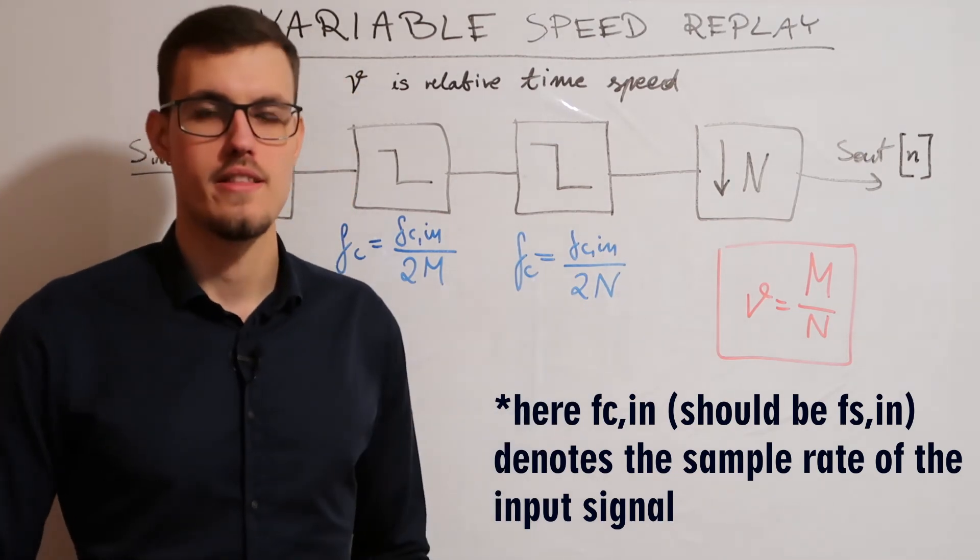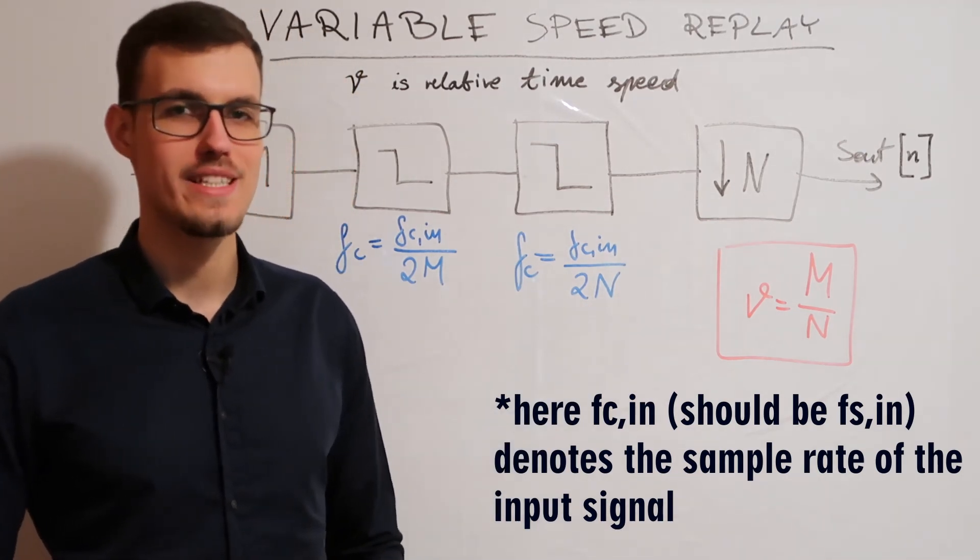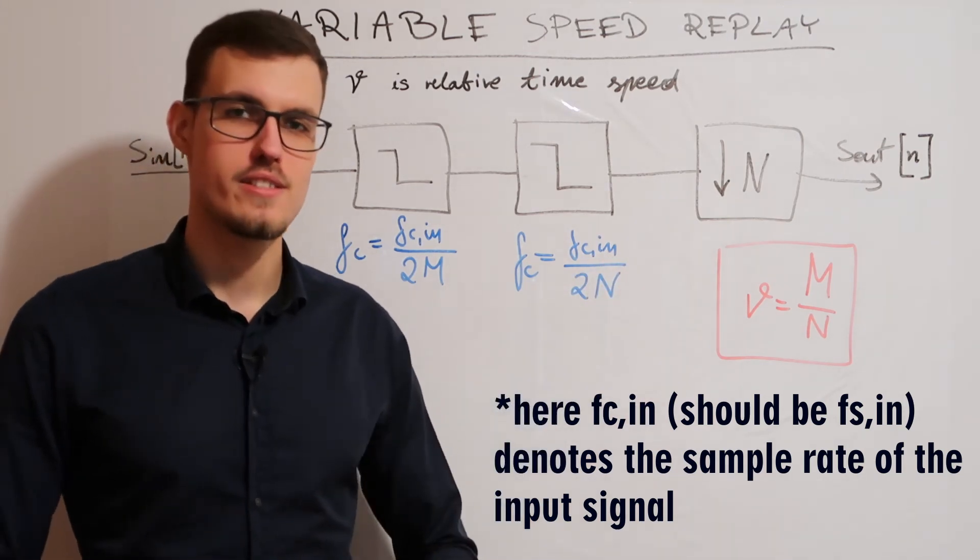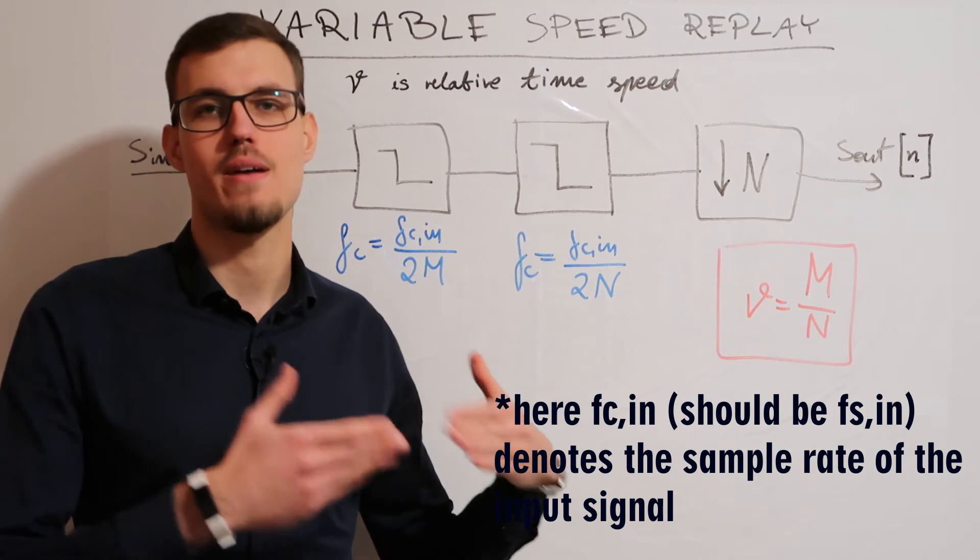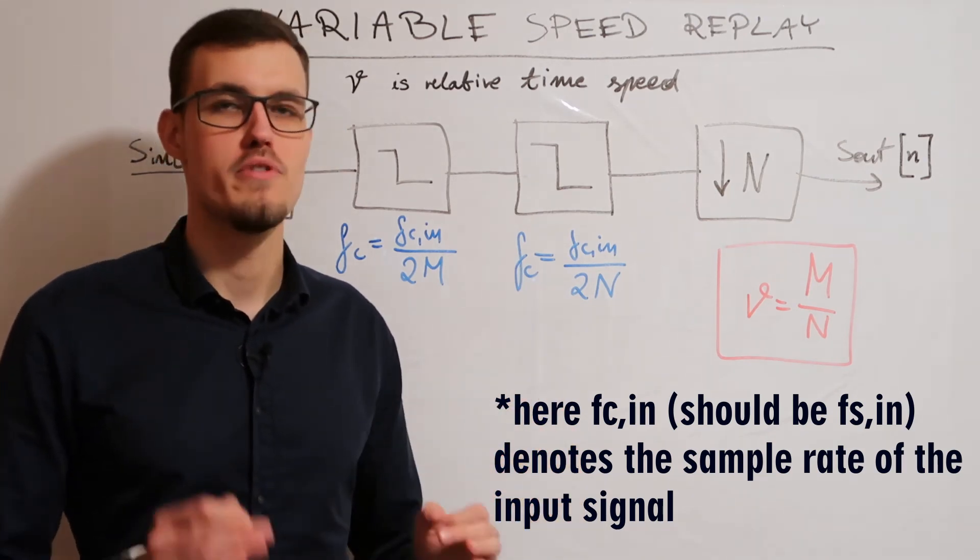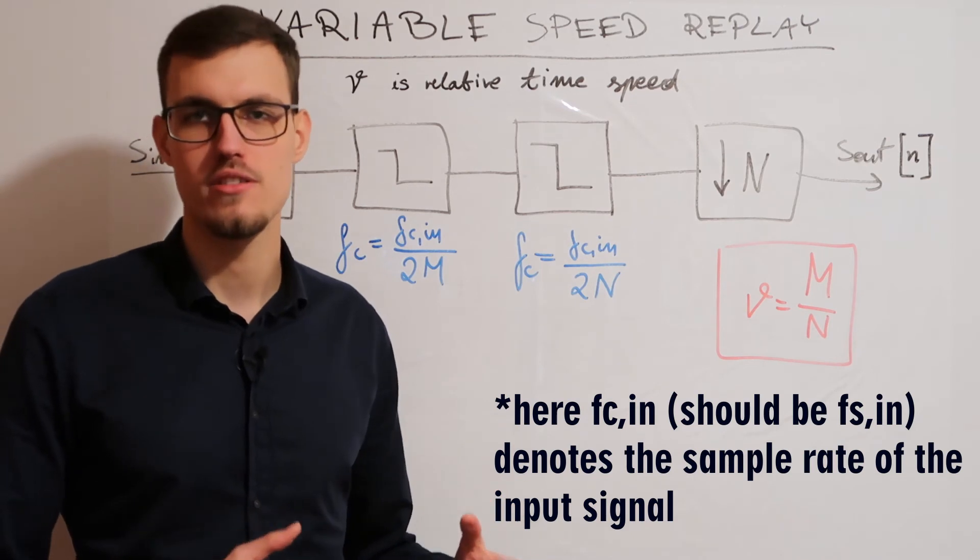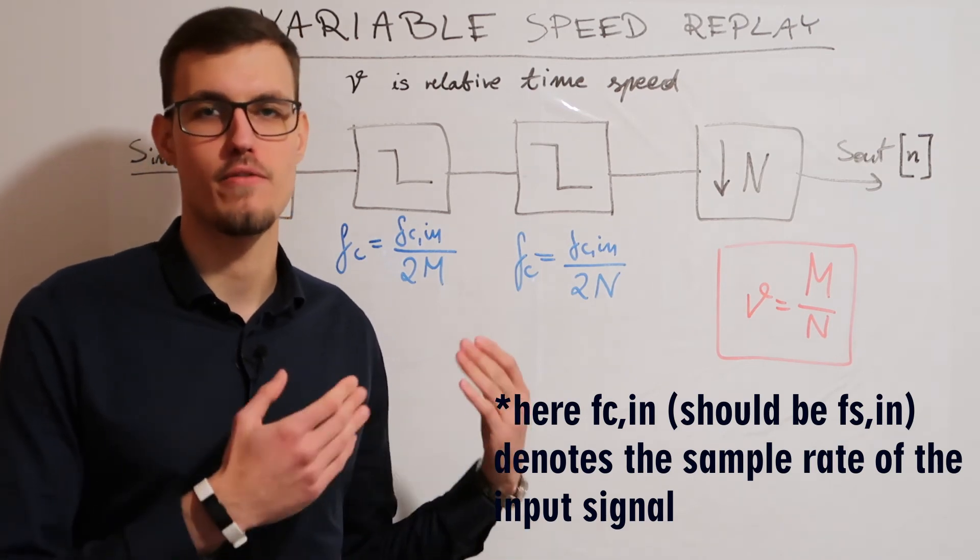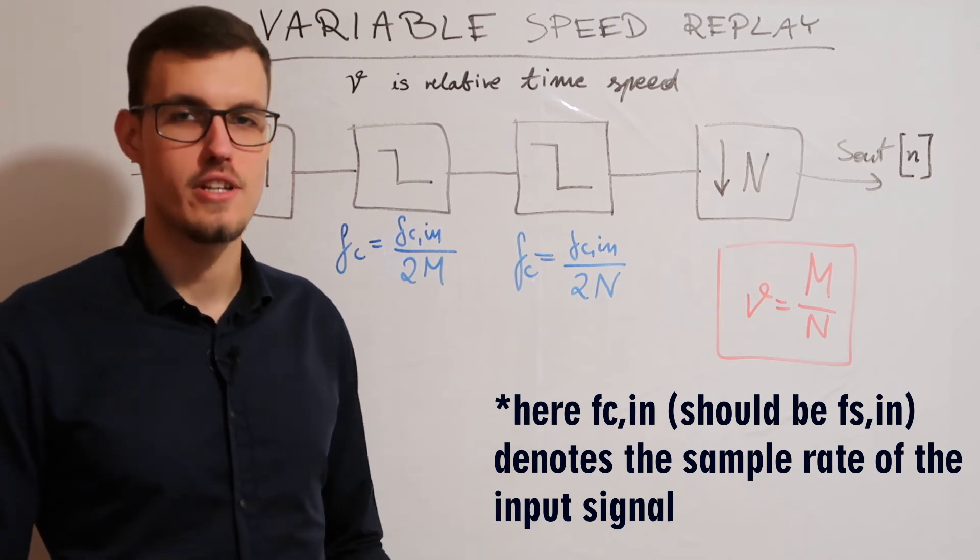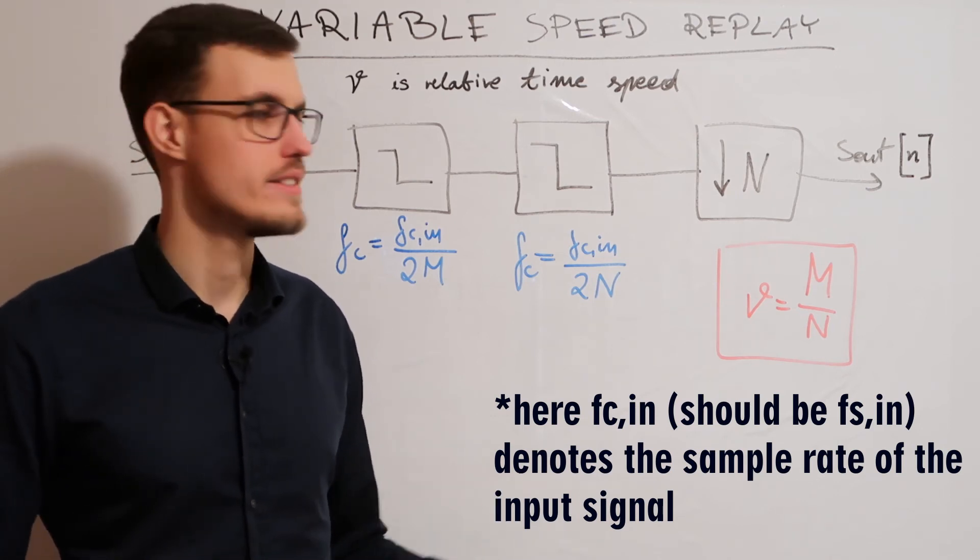Note that we do downsampling last, because it's effectively removing samples from our signal, which could potentially remove some information that was present in it beforehand. And then we get the processed signal at the output.